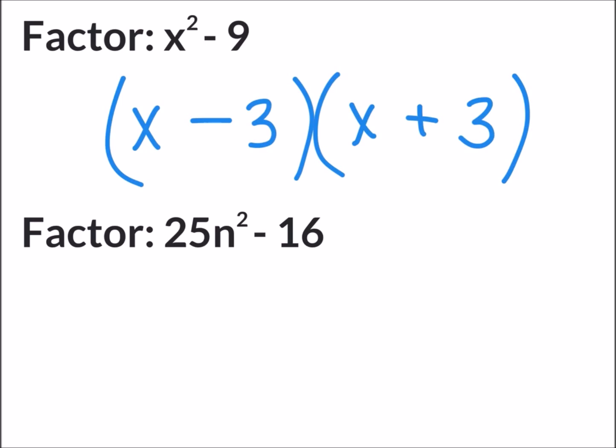The second example asks us to factor 25n² - 16. Notice first that there's a coefficient in front of the n² term. We're dealing with 25n². So write out your brackets and since it's the difference of squares you have a negative and a positive. What is the square root of 25n²? And that will be 5n for each binomial. Now what is the square root of 16? That is going to be 4. So your answer will be (5n-4)(5n+4).